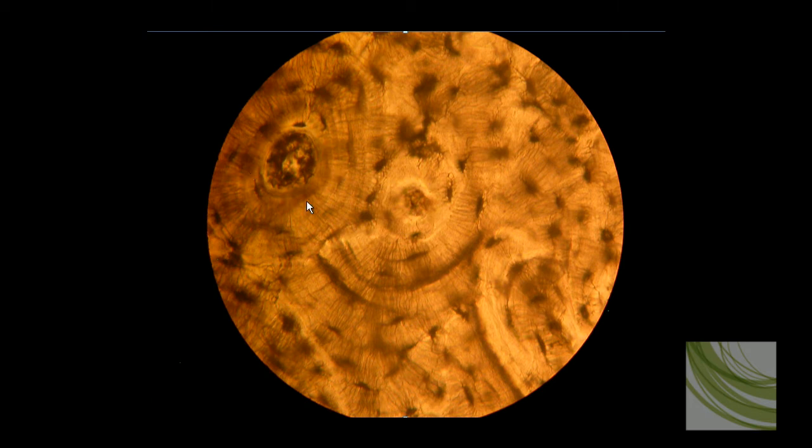Now the rings around the central canal contain little dashes which are little cavities called lacunae. Inside these cavities are osteocytes. The osteocytes are fed blood and nutrients through these little canals called canaliculi.